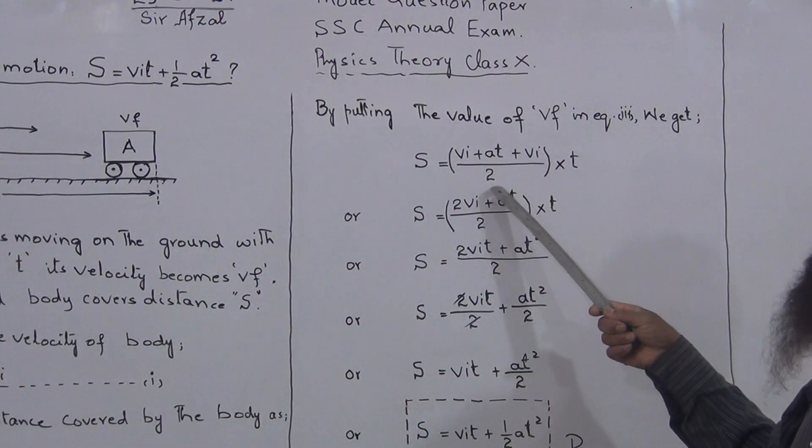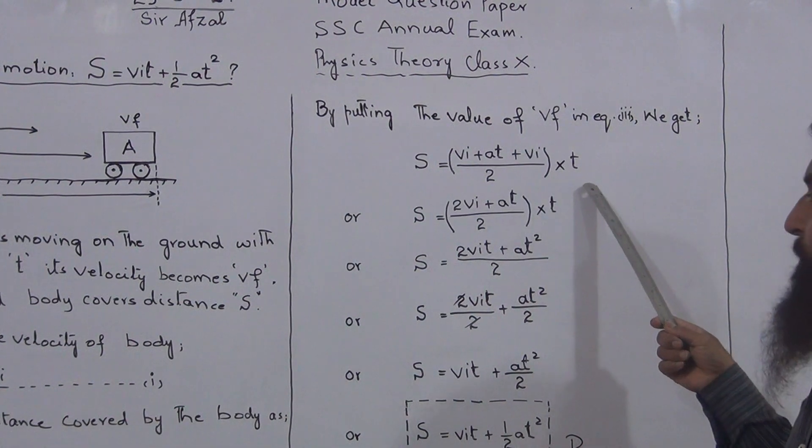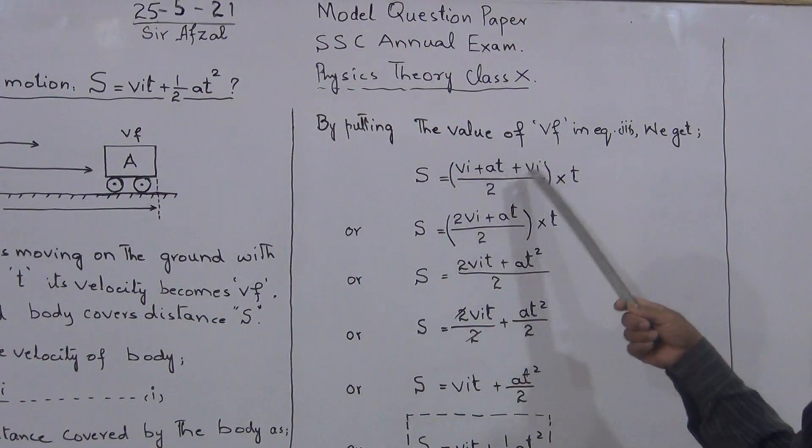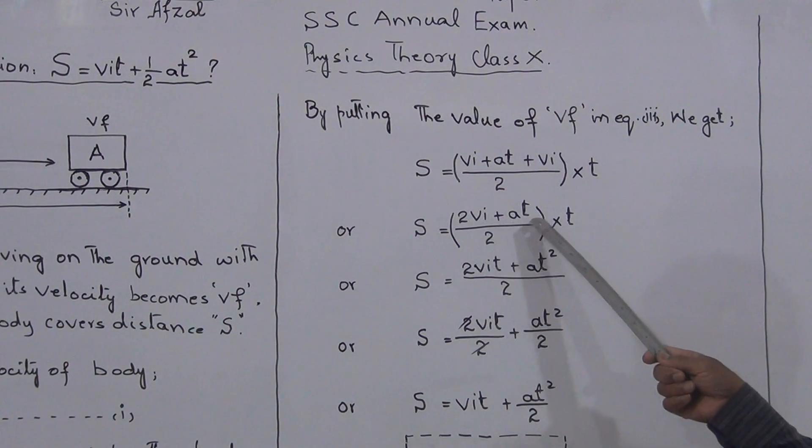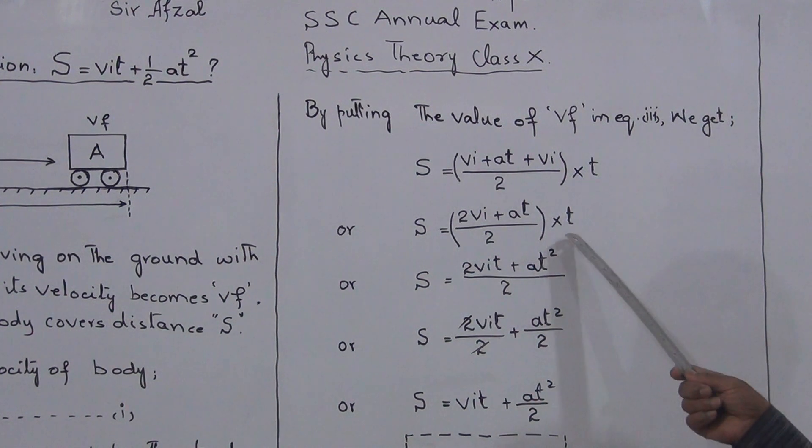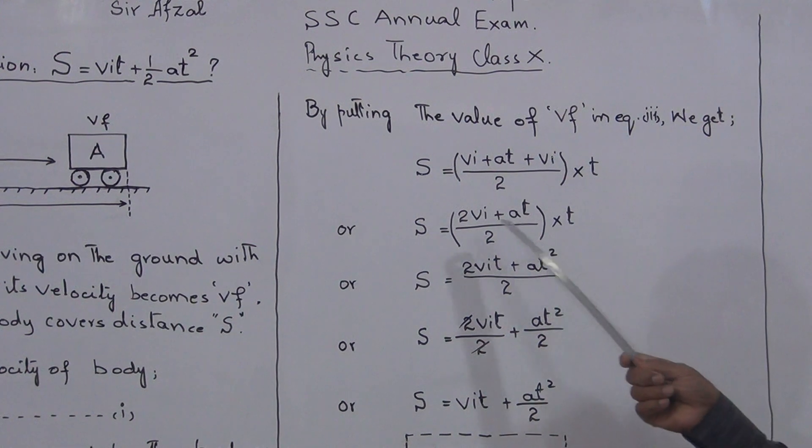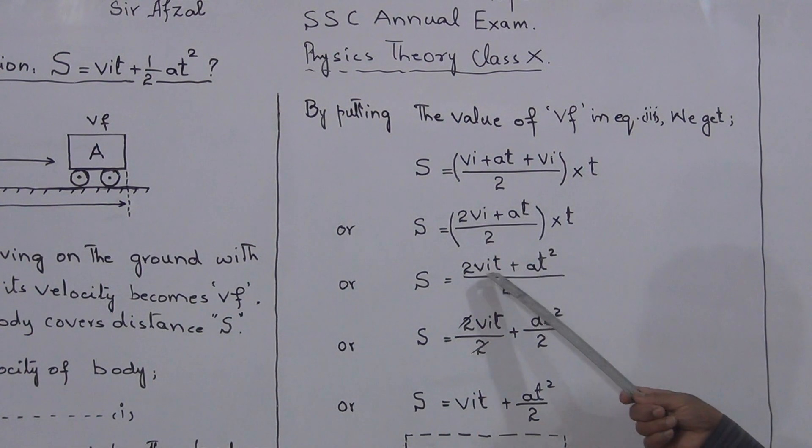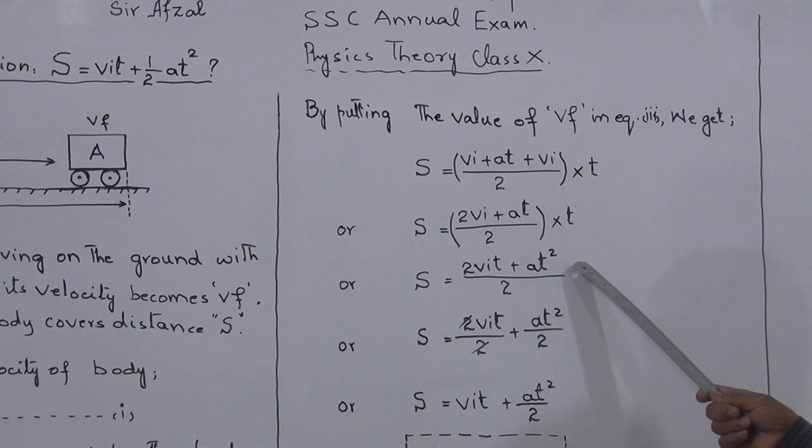Now this is also VI, this is also VI, that becomes (2VI + AT)/2 × T. Now by opening this bracket, T will be multiplied with this 2VI and AT. It will become (2VIT + AT²)/2.